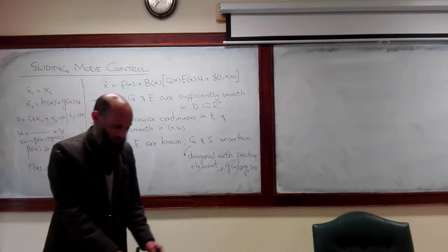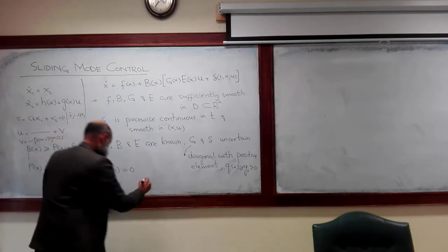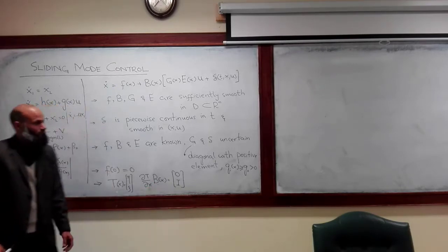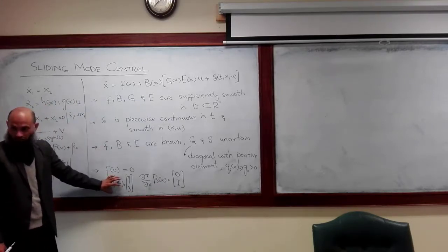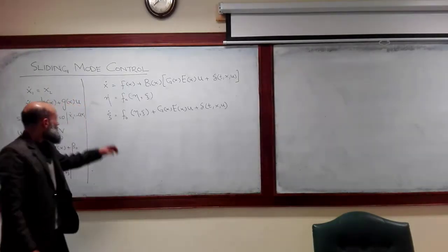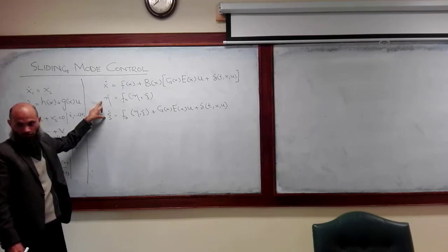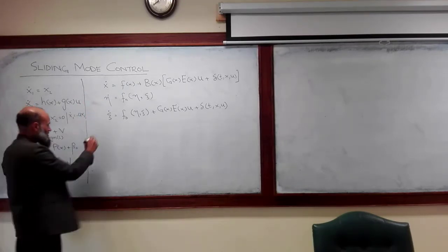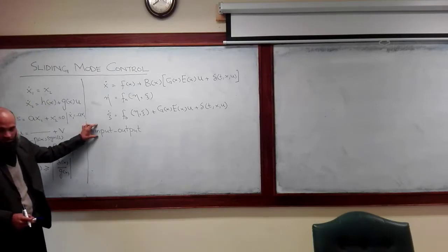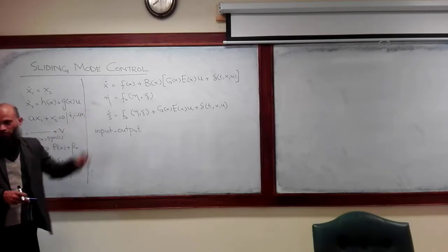Another assumption is that there exists a diffeomorphism — a state transformation — which satisfies a certain condition. If we apply this state transformation, the system represented in the new state variables will be converted into a particular form. This nonlinear system, when described using that state transformation, is slightly more general than the form considered in input-output linearization. This form is called the regular form, which is a bit more general than the normal form.